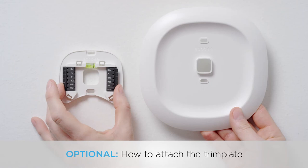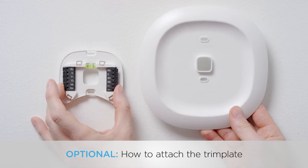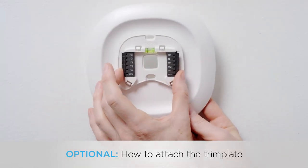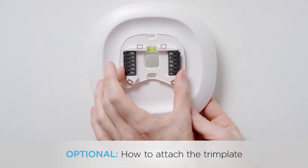Here's where you decide if you want to use the large trim plate with your Ecobee 4. It's useful if you want to hide paint marks or holes in your wall left by your old thermostat. If you'd like to use the trim plate, simply align the mounting holes on the trim plate and backplate and press them into place together. The backplate should sit flush against the trim plate when it's attached correctly.